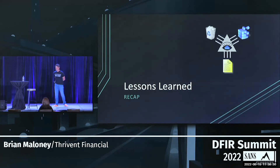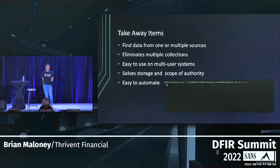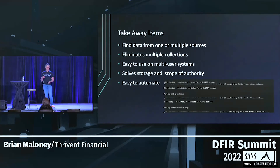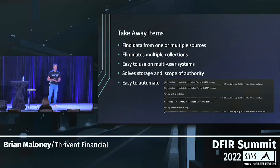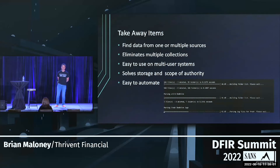Lessons learned. The key takeaways are: we can find data from one or multiple sources — we can just grab the dat file and get that information in, or we can add in the user's registry plus the recycling bin for a bigger and more complete picture. This eliminates multiple collections. It's easy to use on multi-user systems, it solves scope of authority and storage issues, and it's easy to automate. Below is an example of the command line running.